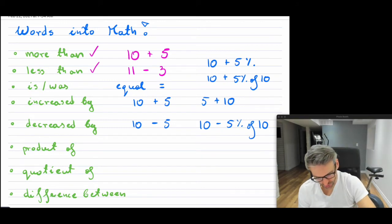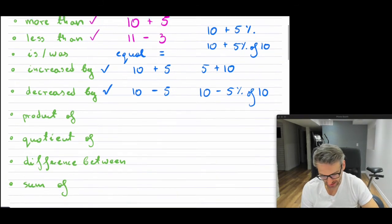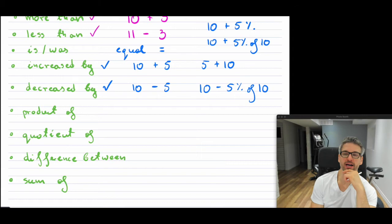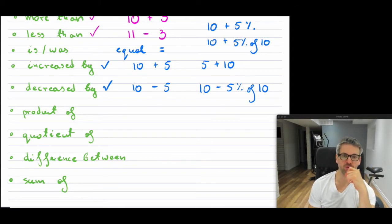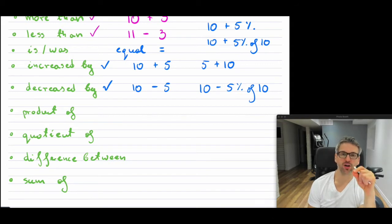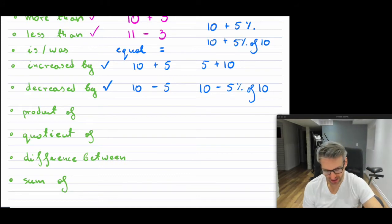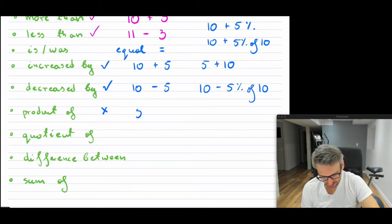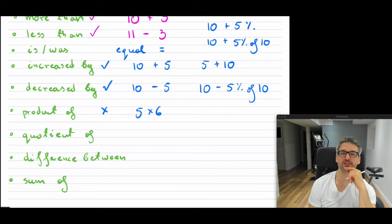Now, "product of." Sometimes the word product is just used directly. So you might see something like "the product of five and six." The word "product" means multiply, and when you're multiplying, so product of five and six would be five times six.